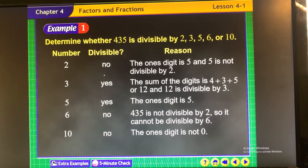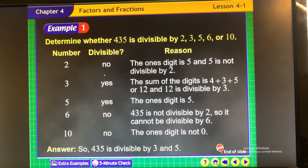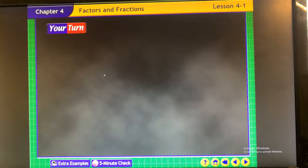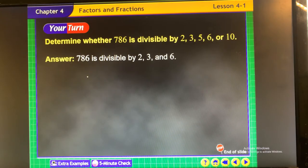Why do we need to know these rules? It makes mental math easier and able to do factoring easier. So do it again, 786, what would you say for 2? Yes. What would you say for 3? You would have to add 7 plus 8 plus 6. You would say no for 5. 6 would be, if you said yes to 2 and 3, then it's going to be yes to 6. And 10 would be no, because it didn't end in a 0. So it's divisible by 2, 3, and 6.